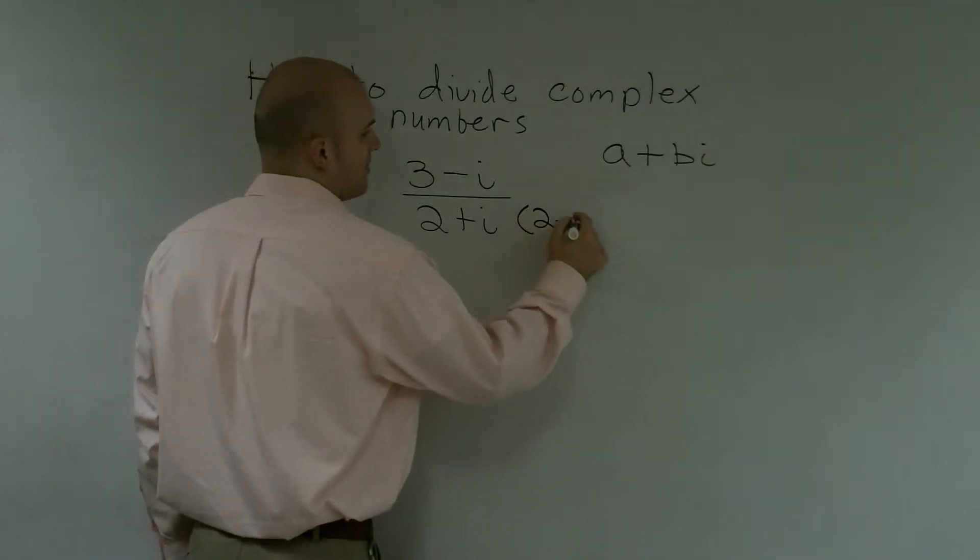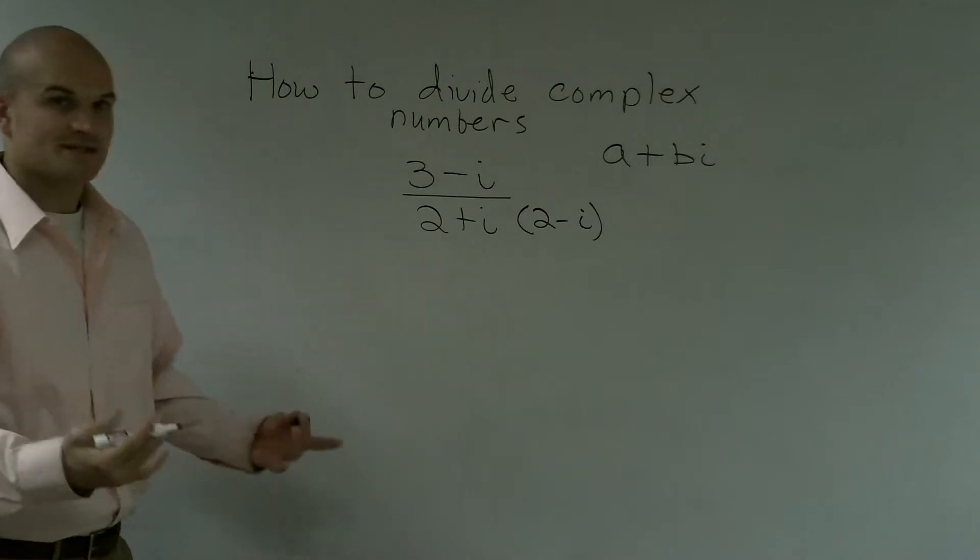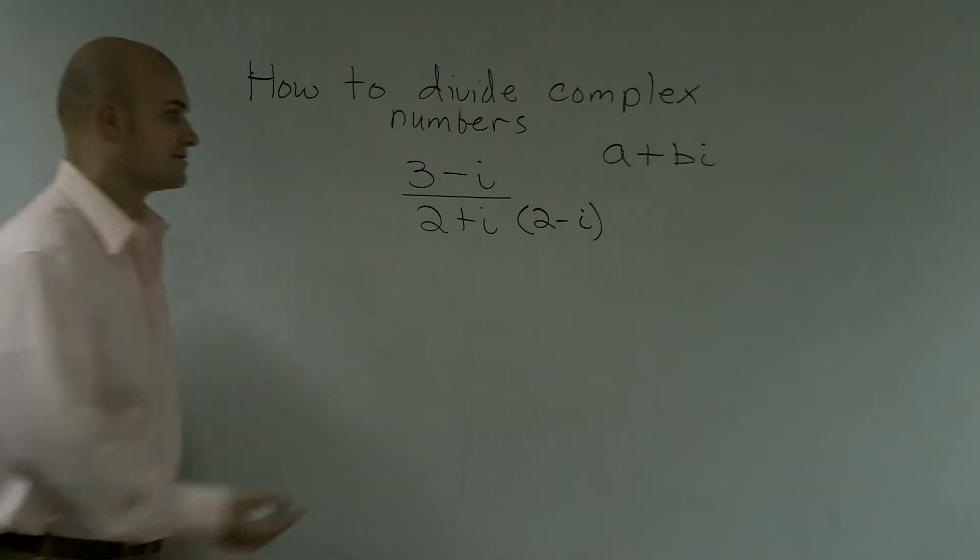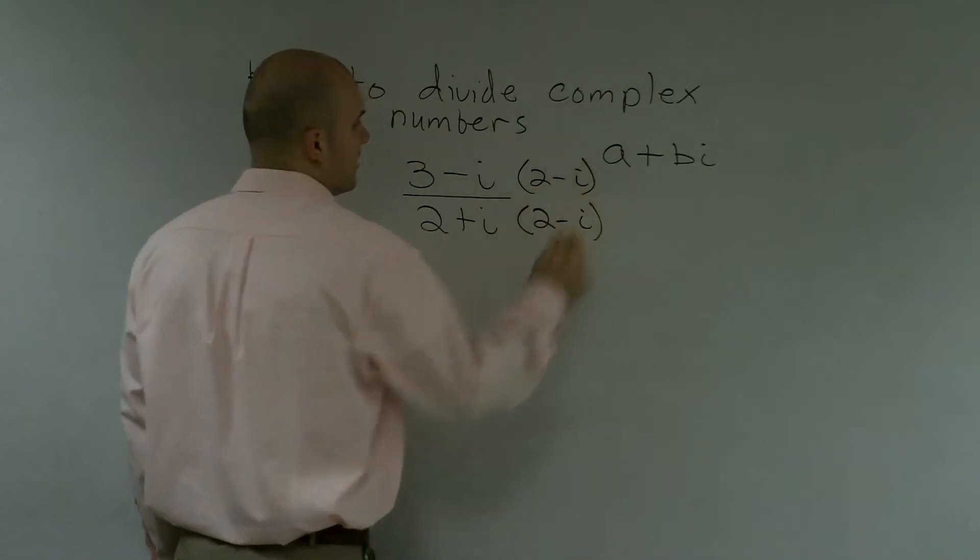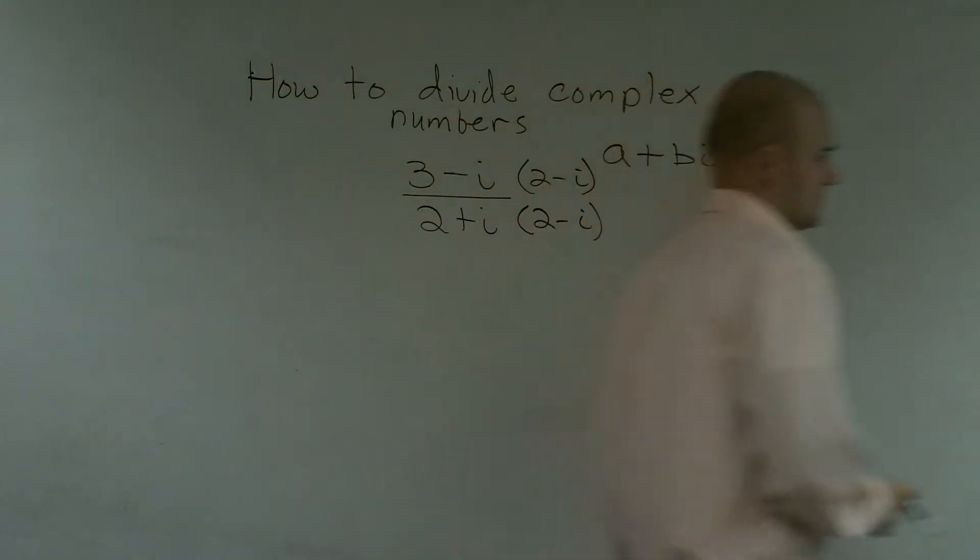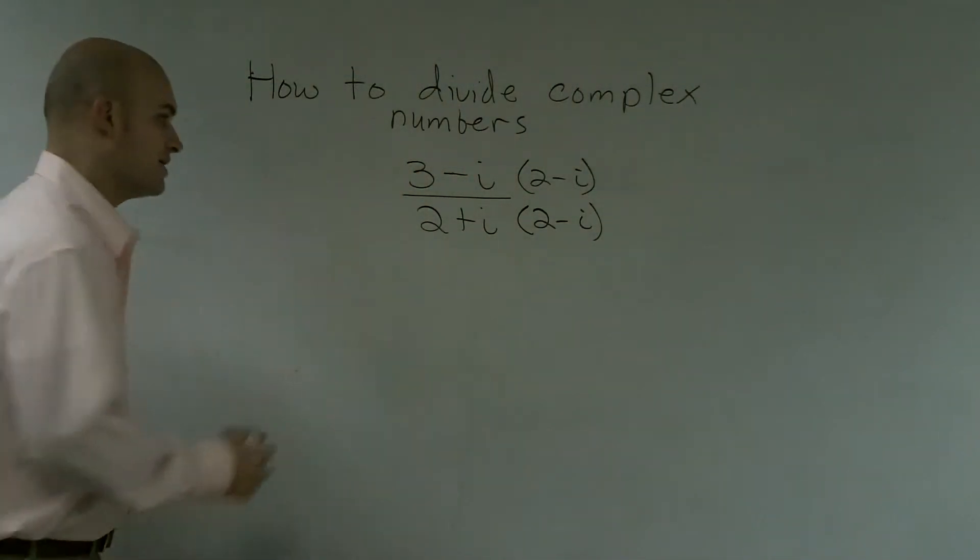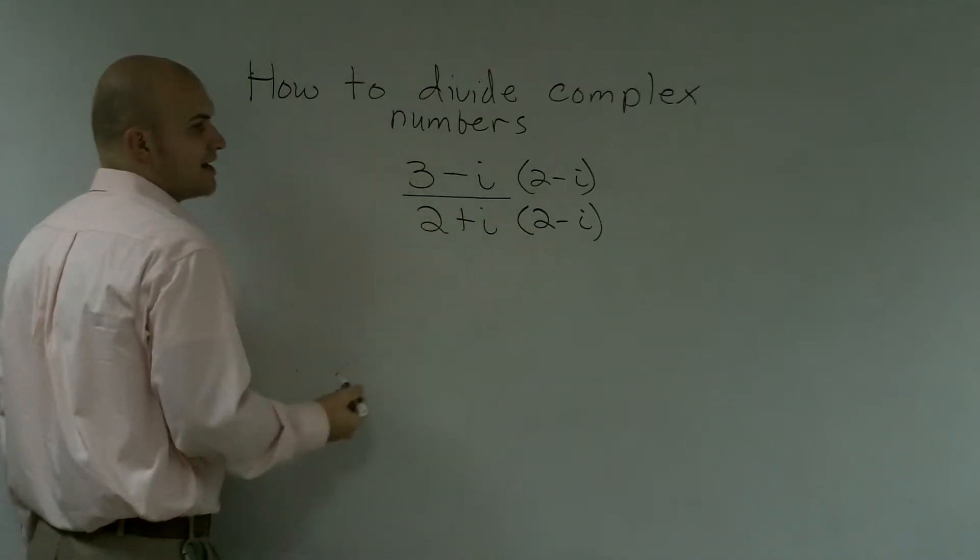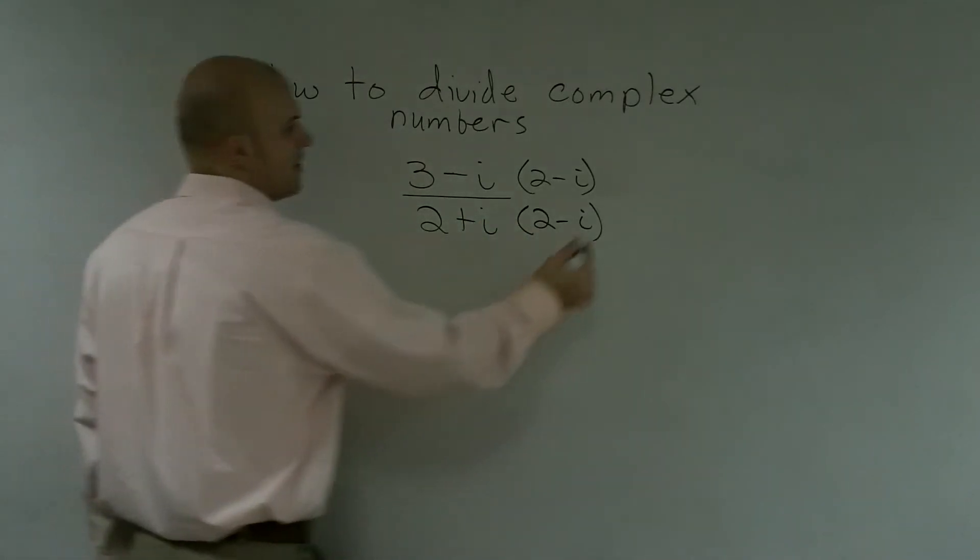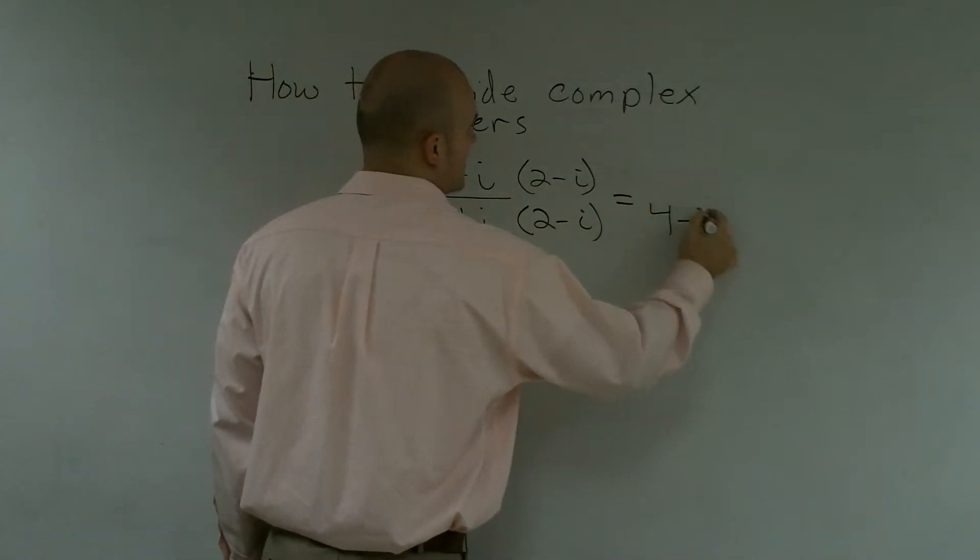So just by multiplying by my conjugate, which you get a 2 minus i, what this will give me, it will give me the difference of squares. So what will happen is, if I multiply by the conjugate, and I multiply by the top and the bottom, now what's happened is, if you guys can remember the difference of squares, what you end up with is these two middle terms are not going to cancel out when I multiply these. So I automatically know that this is going to be 4 minus i squared.